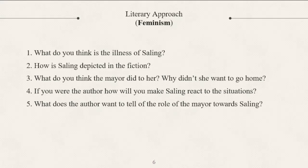Number two: How is Saling depicted in the story? Paano natin makikita yung ilustrasyon about sa pagkatao o katangian ni Saling dun sa fiction na yon? Maaaring natin masabing si Saling ay a hardworking and loving daughter who rushed to aid her father even though it cost her virtue and integrity. Yun ang maaaring maging sagot natin sa number two.